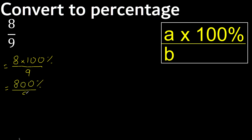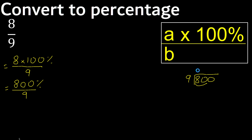Divided by 9. 8 is less, therefore next: 80 is not less. With 80, 9 times which number is nearest to 80 but not greater? 9 x 9 is greater, so multiply by 8.